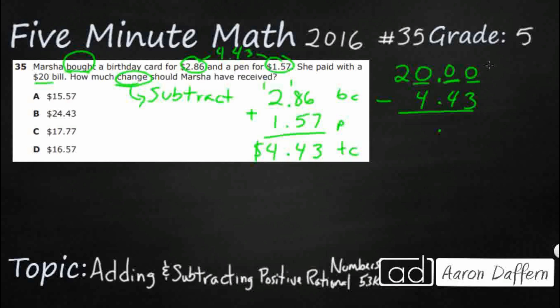Before we go further, look at answer choice B — they lined everything up but did the wrong operation: they added rather than subtracted, so B is incorrect. We need to subtract, which means a lot of borrowing. We go all the way to our first non-zero digit, that's a 1, then step by step: 10, now 9; 10, now 9; 10 — now we can subtract. So that gives us 7, 5, 5, and 1. My answer is $15.57 — answer choice A.